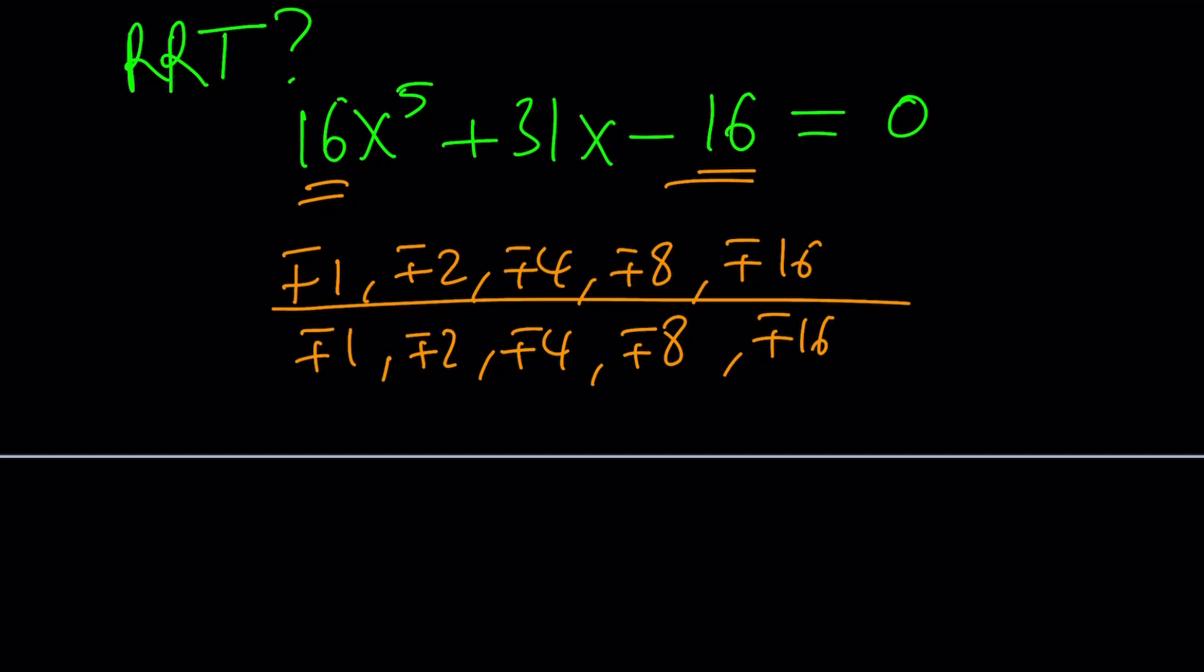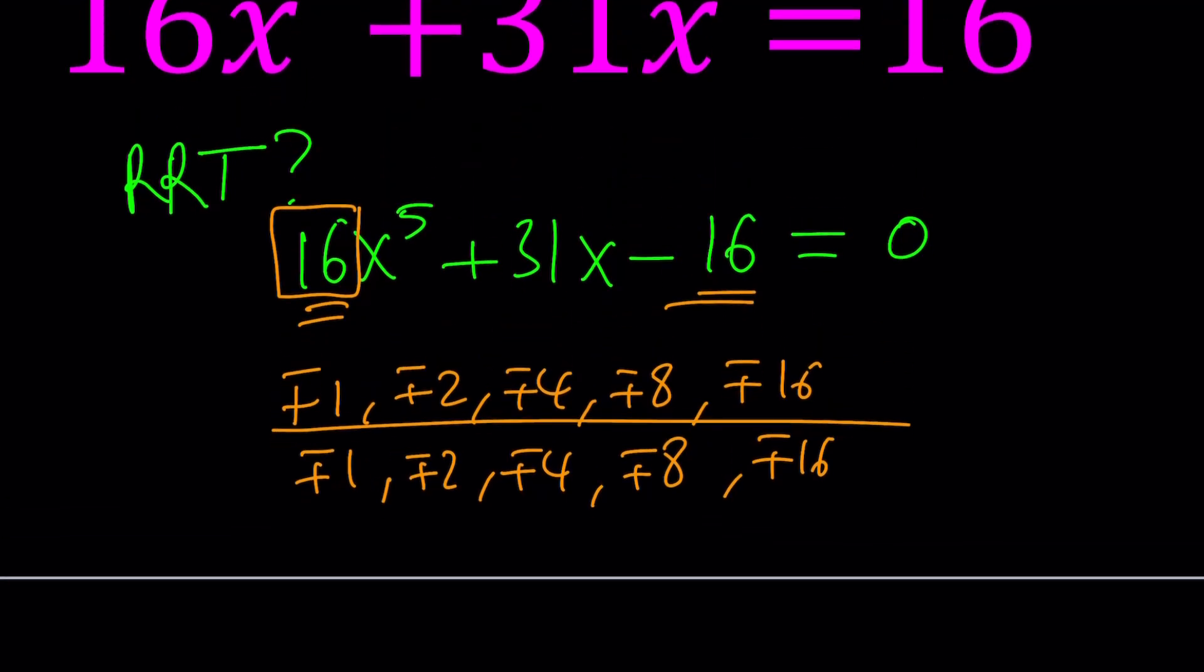I want to turn this equation into a monic. What is a monic? The leading coefficient is 1. Because, in that case, we have a better chance of using the RRT.